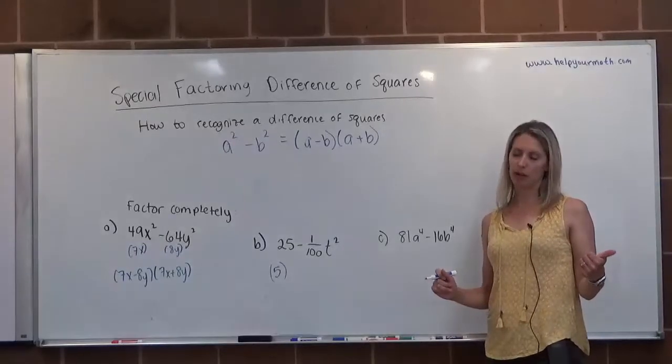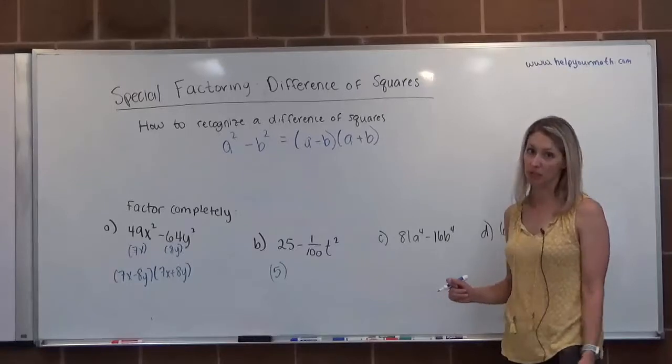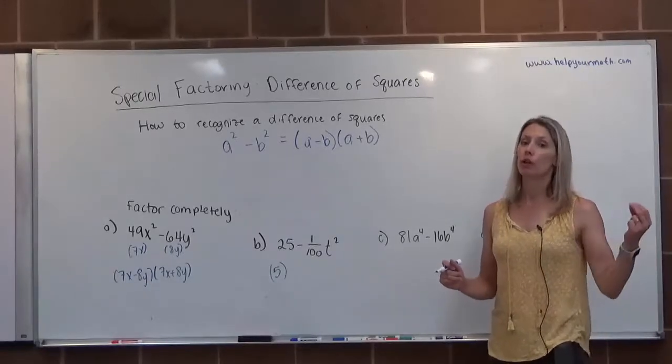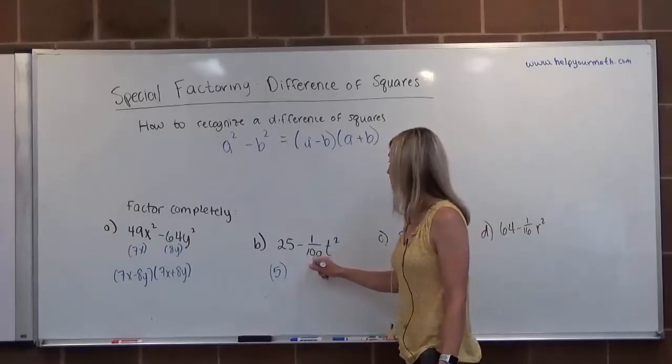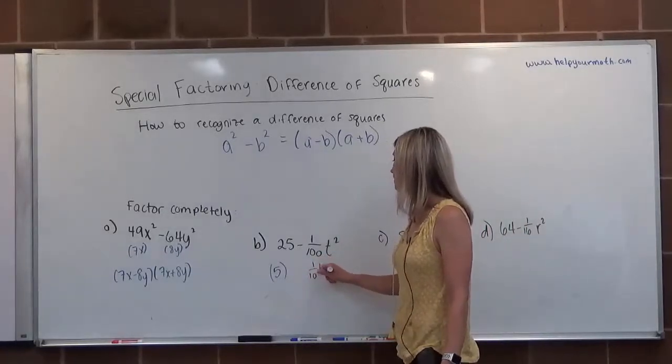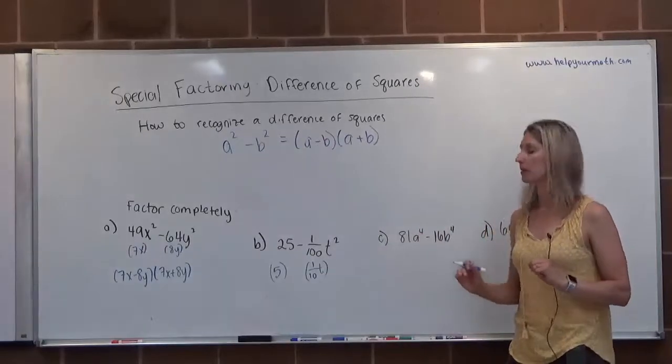1 is a perfect square in the numerator. Its root is 1. 100 in the denominator is a perfect square. Its root is 10. So the square root of 1/100th is 1/10th. We would have 1/10th, and then the square root of T squared is T. Not too bad. You can breathe a sigh of relief.